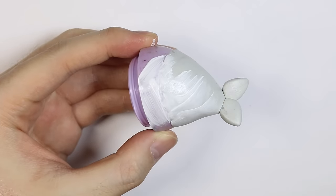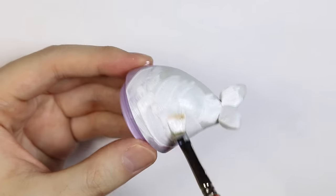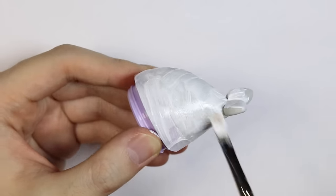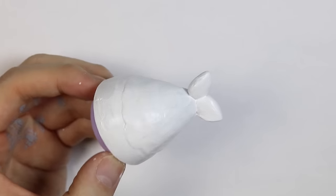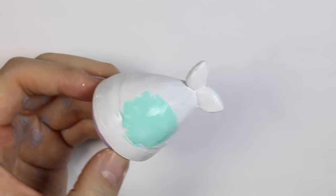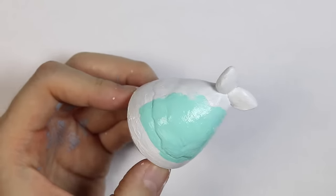For the tail, I'm giving a base layer of white paint just so it's easier to paint on the pastel colors next. Once the white is dried, I'm giving a layer of mint paint.